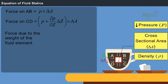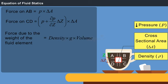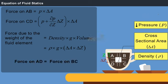The force created due to the weight of the element ABCD is expressed by the equation density into gravity into volume. This can be represented by the equation rho into G into delta A into delta Z. The pressure on the sides AD and BC are equal and opposite.